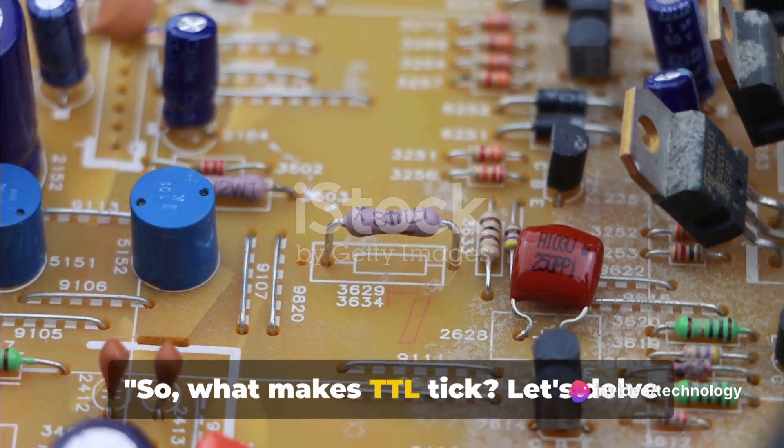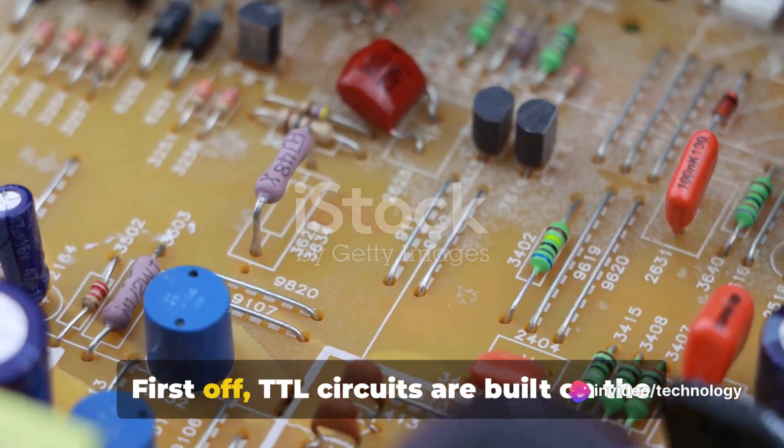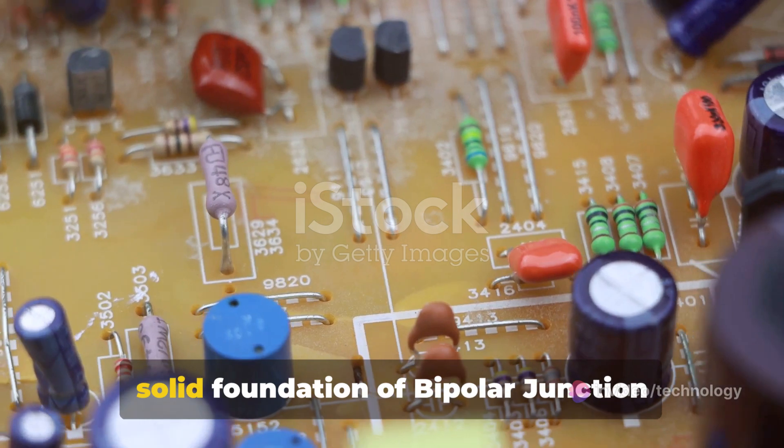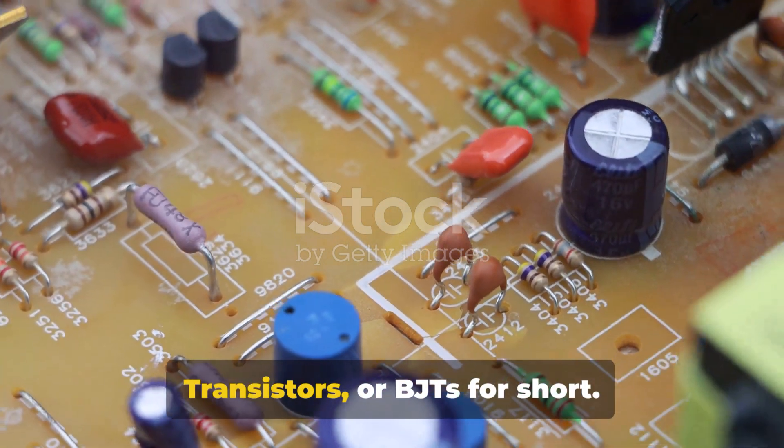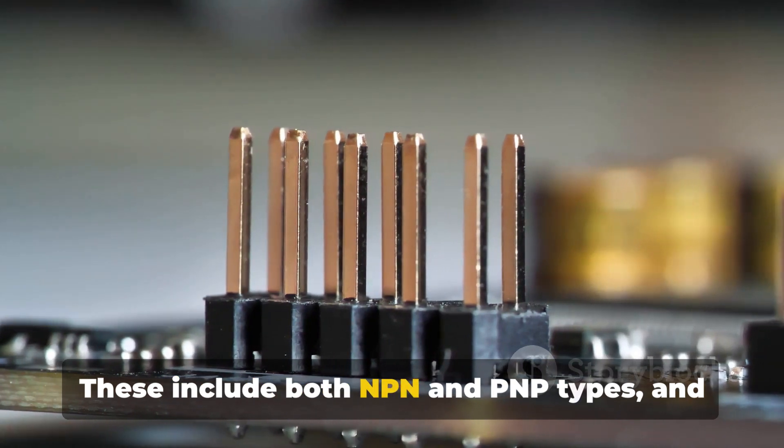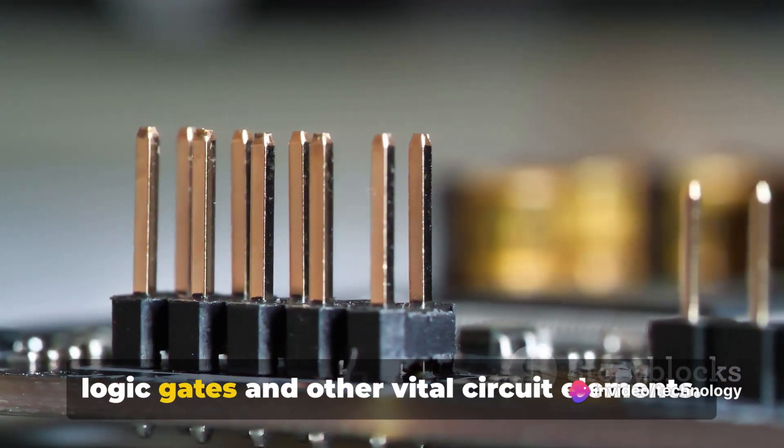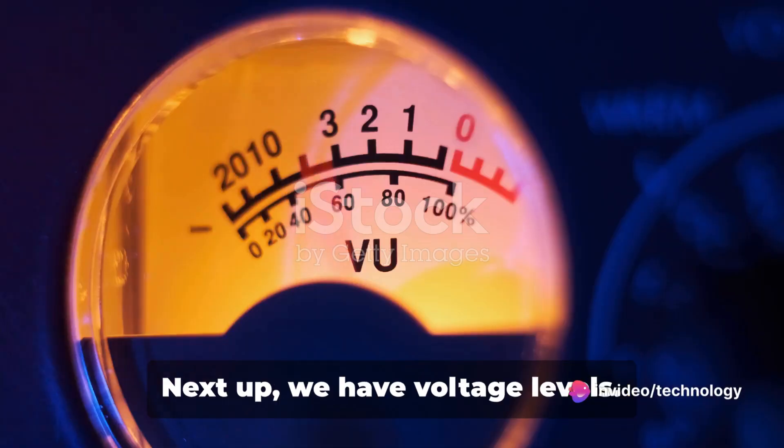So, what makes TTL tick? Let's delve into its characteristics. First off, TTL circuits are built on the solid foundation of bipolar junction transistors, or BJTs for short. These include both NPN and PNP types, and they're the workhorses that implement logic gates and other vital circuit elements.